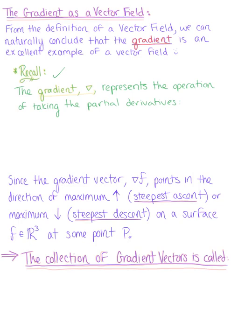The gradient is the vector operation of taking the partial derivative. Assuming that f is in R³, the components of the gradient are ∂/∂x, ∂/∂y, and ∂/∂z.